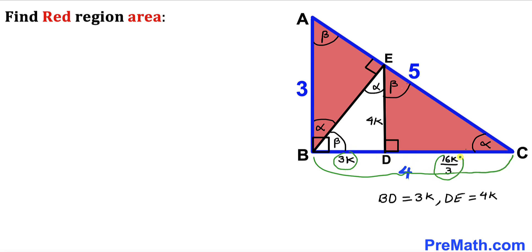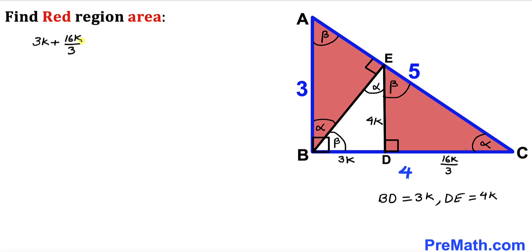We can see that segment BD is 3K and segment CD is 16K/3, so the whole side BC is going to be 3K plus 16K/3.